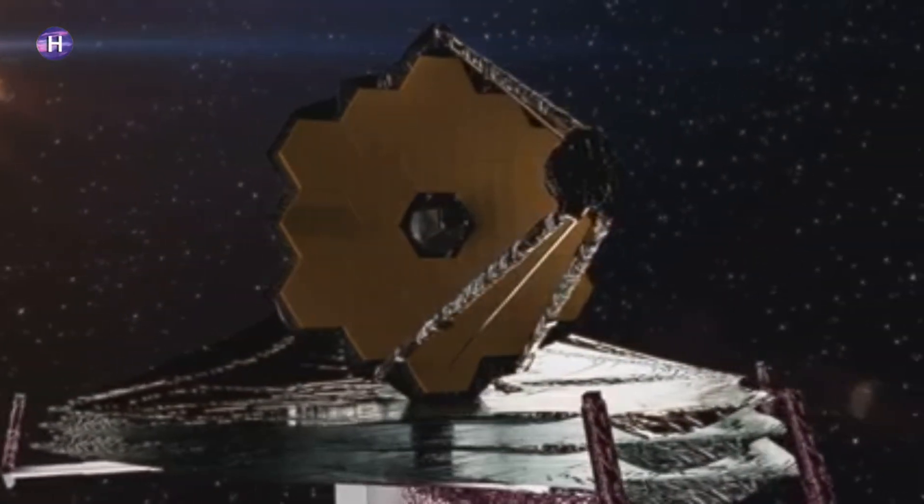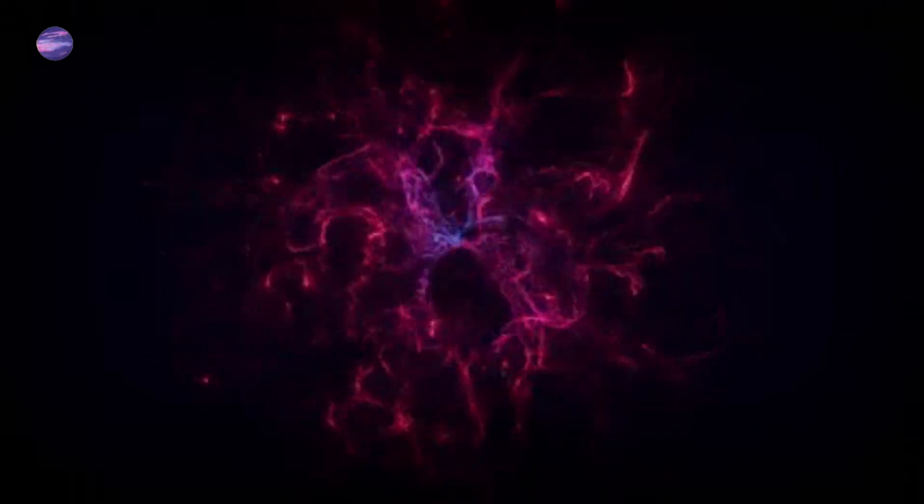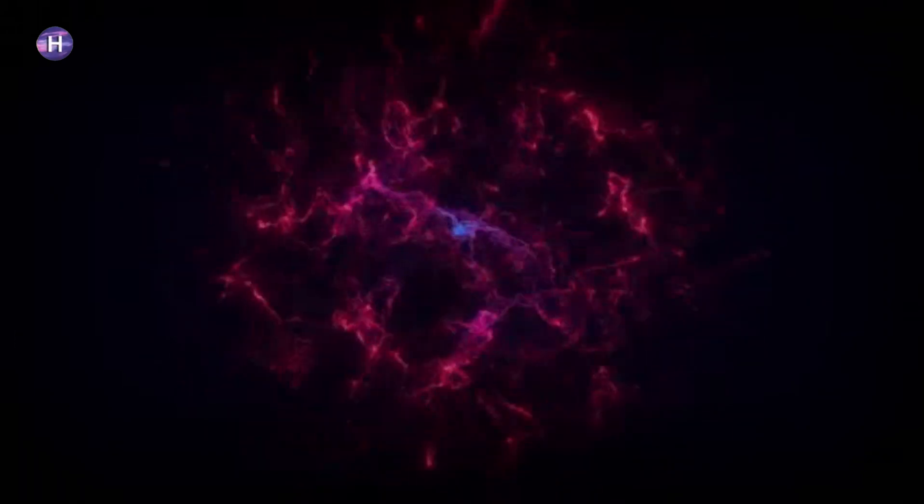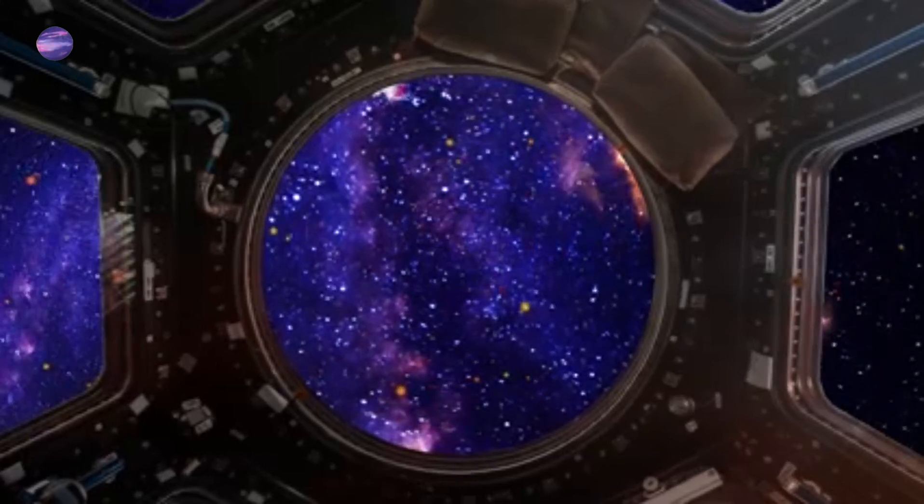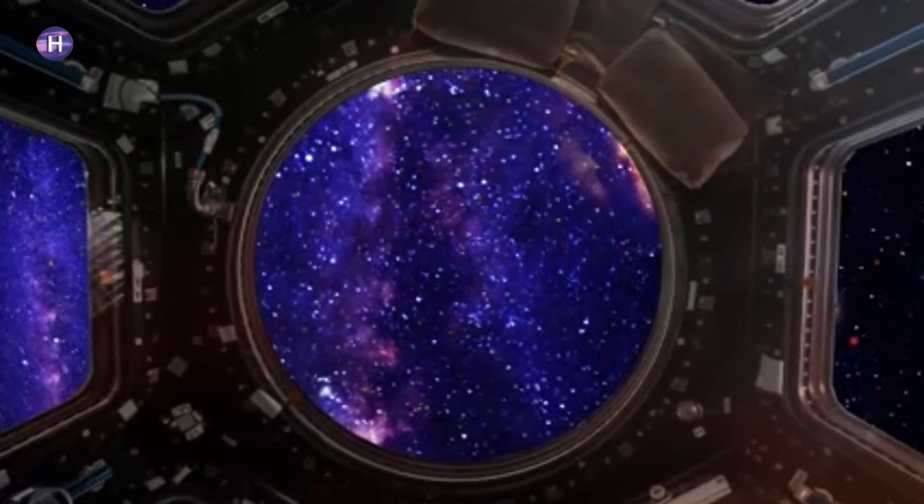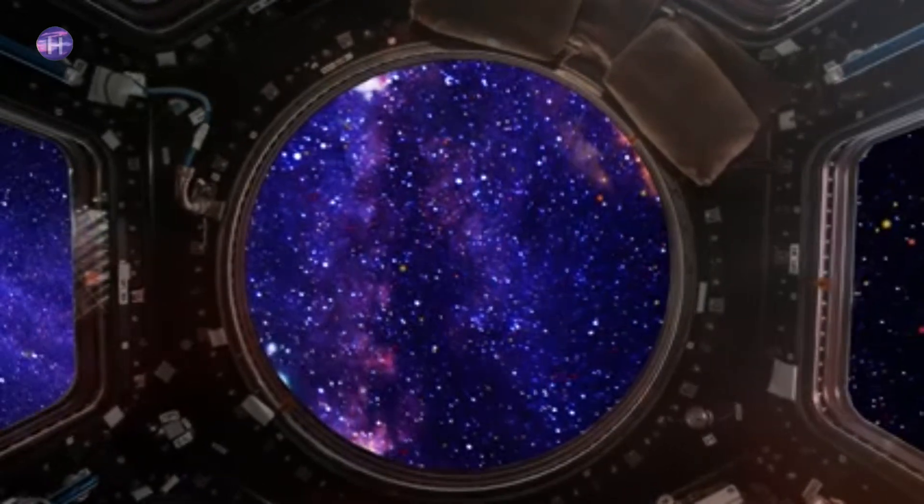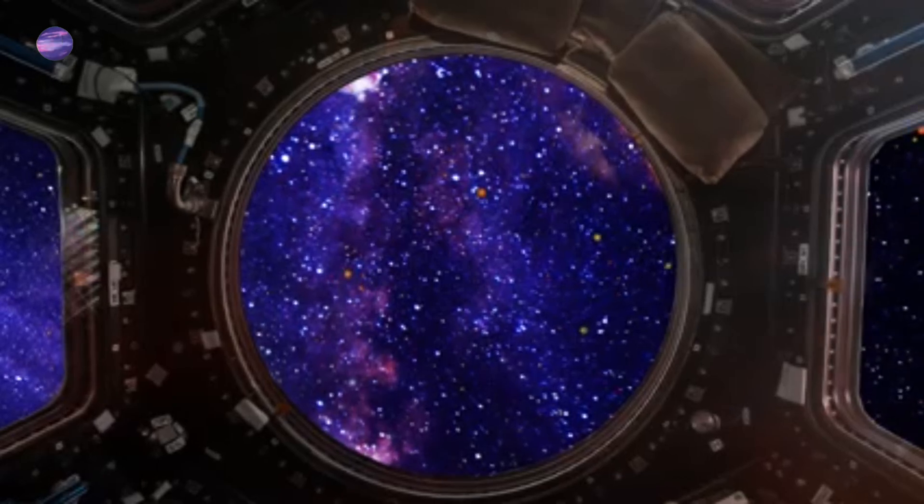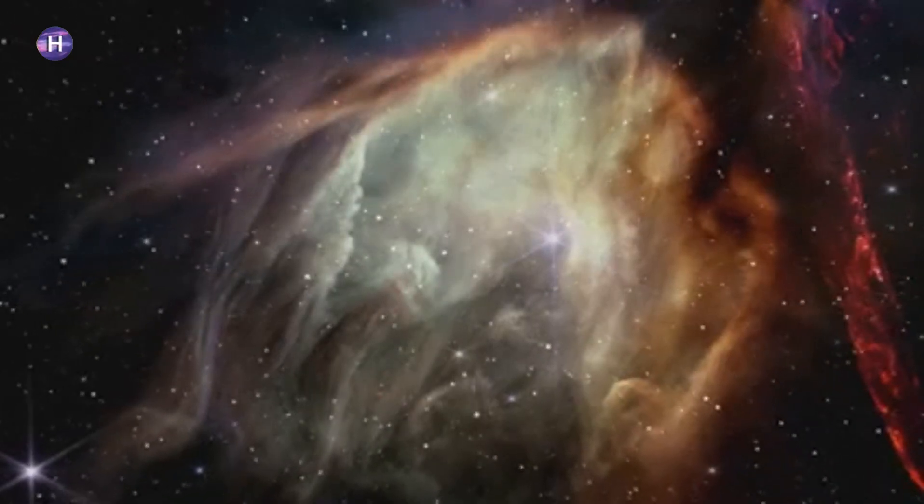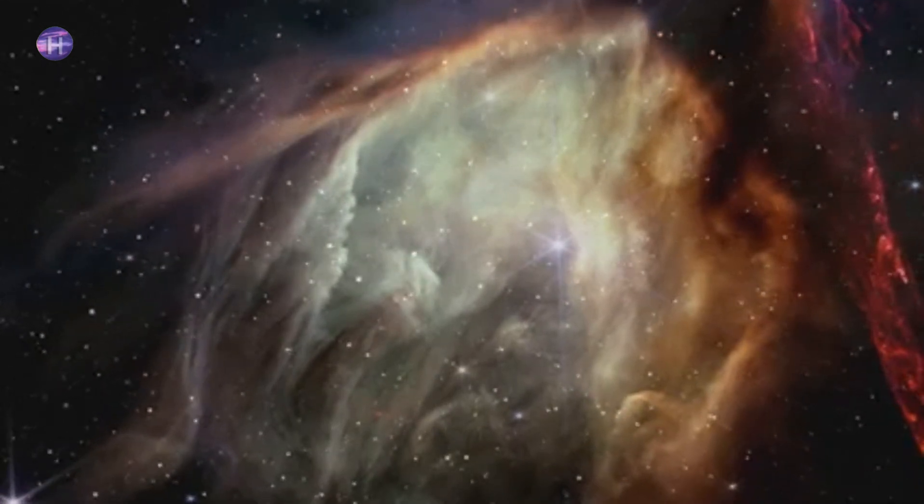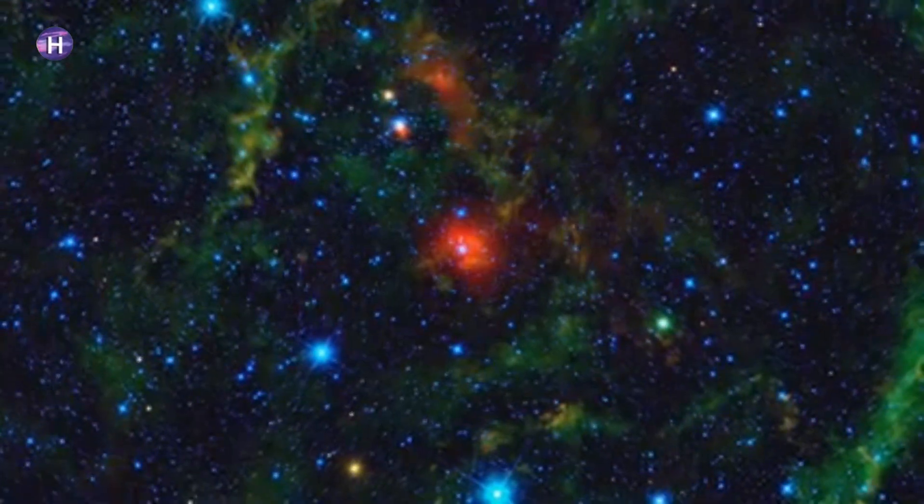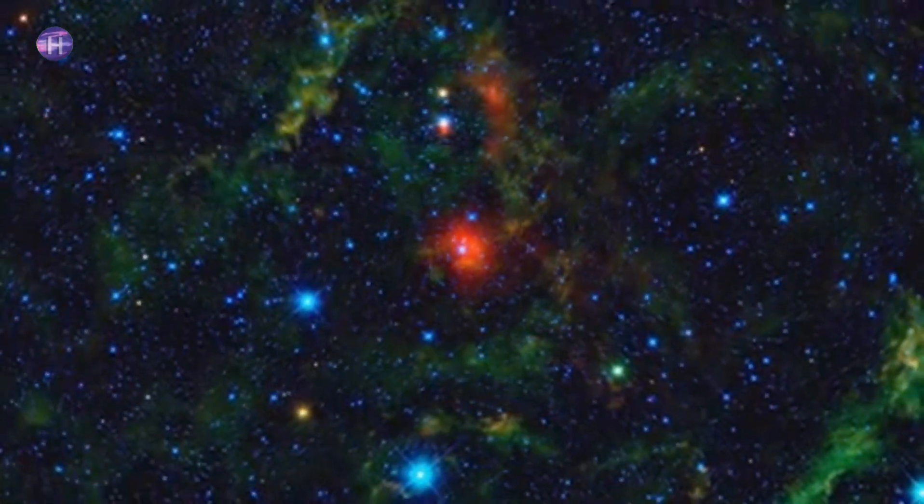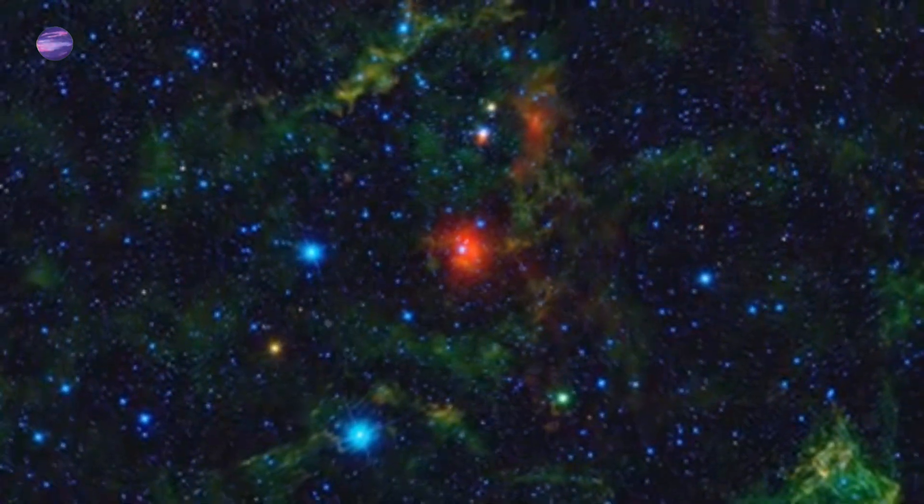By studying this light, we can learn about the conditions in the early universe. The data collected by JWST helps scientists to understand the processes that led to the formation of the first stars and galaxies. This sheds light on the fundamental laws of physics that govern the universe and provides clues about the mysterious dark matter and dark energy that make up most of the cosmos. We can understand how the first stars and galaxies formed. The images and data from JWST reveal the intricate details of star formation, from the collapse of gas clouds to the ignition of nuclear fusion in stellar cores. These observations help us to comprehend the life cycles of stars and the complex interactions within galaxies that lead to the creation of new stars and planetary systems.